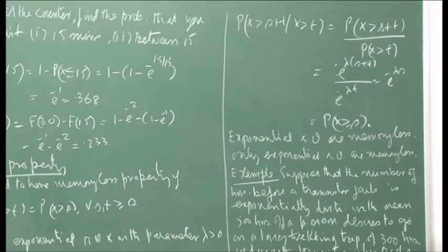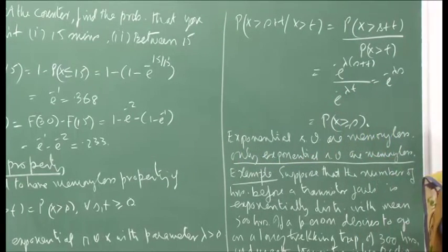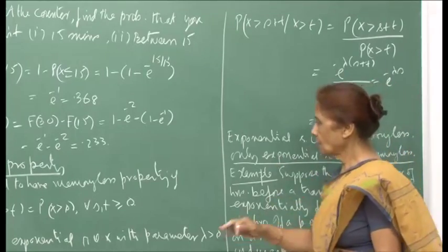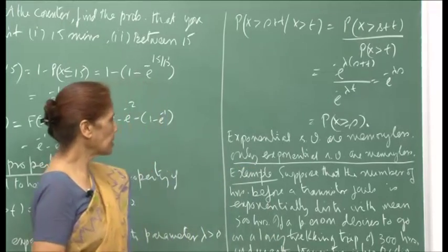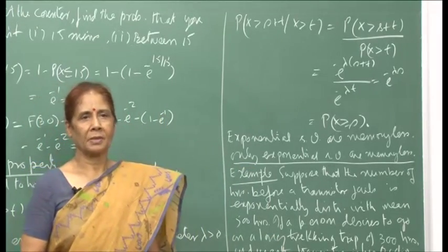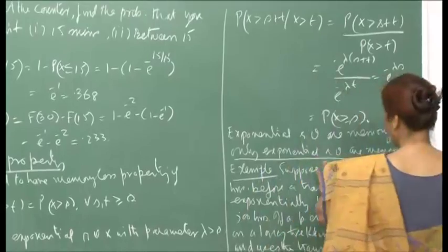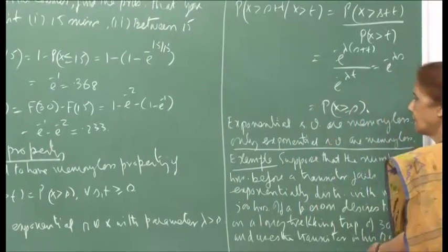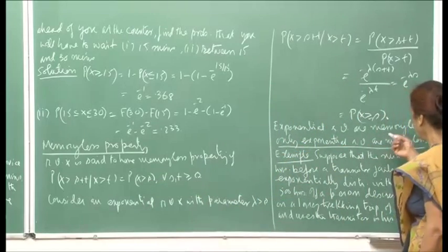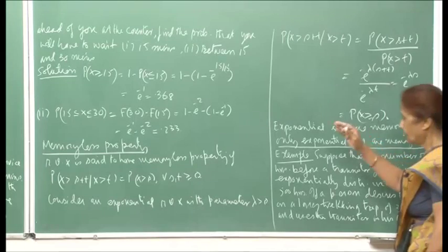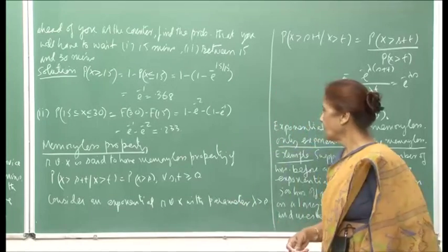Exponential random variables are memoryless. With a bit more calculus, one can show that if you impose the memoryless property on a continuous random variable, only exponential random variables satisfy this condition — the PDF that satisfies the memoryless property will actually be the exponential PDF.